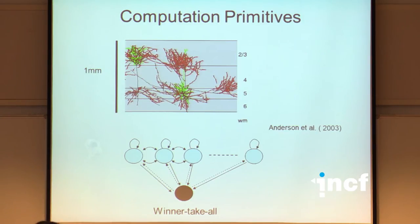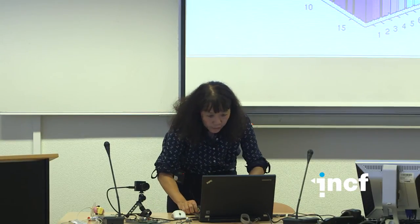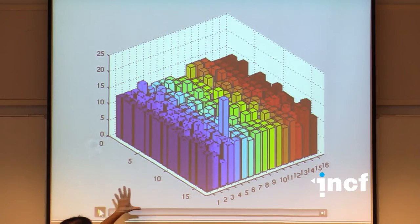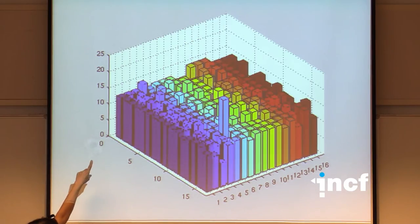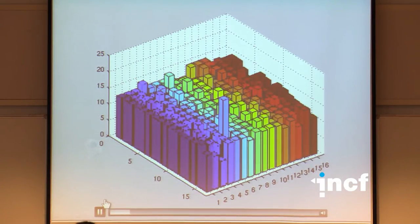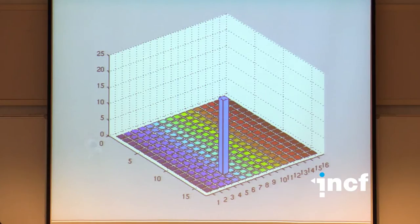An example on this chip: a 16×16 array of neurons all receive the same input, except one receives a slightly higher input. The chip dynamically figures out which neuron has the highest input, and at the end only that one neuron remains active — demonstrating winner-take-all behavior in hardware.